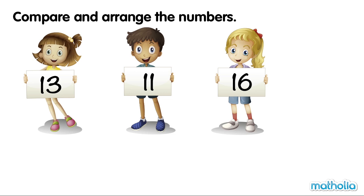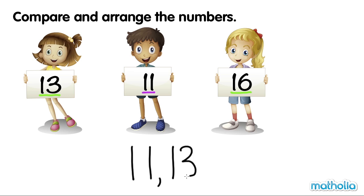Let's arrange the numbers from the smallest to the greatest. 11 is smaller than 13 and also smaller than 16, so 11 is the smallest number. Let's compare the other two numbers. 13 is smaller than 16, so 13 is the next number. 16 is the greatest number.